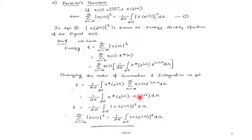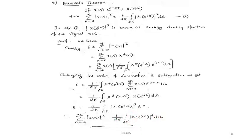The inner summation is the DTFT definition, so it equals X(e^{j\omega}). Therefore E = (1/2π)·integral over 2π of X*(e^{j\omega})·X(e^{j\omega})·dω = (1/2π)·integral over 2π of |X(e^{j\omega})|²·dω. This is called Parseval's theorem, and |X(e^{j\omega})|² is the energy density spectrum. This is an important theorem often asked in exams.